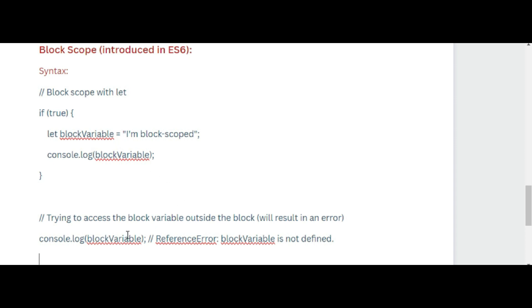Key points: first, global scope is accessible throughout the entire program. Second, local scope is limited to the function or block where the variable is declared. Third, block scope is introduced with let and const and is confined to the block where the variable is defined. Understanding scope is crucial for writing clean and error-free code — it helps prevent naming conflicts and allows for better control over variable accessibility.